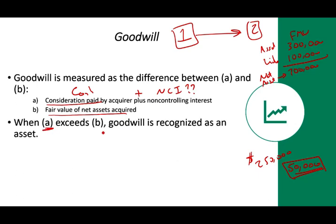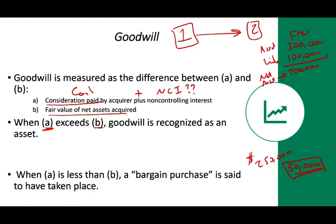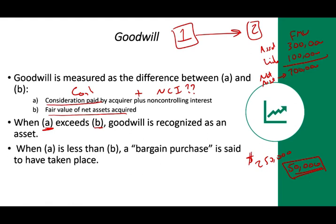When consideration paid exceeds the fair value of net assets, you recognize the excess as goodwill — an asset on the balance sheet. If you pay less than fair value, you have a bargain purchase and record a gain. Let's look at a real example.